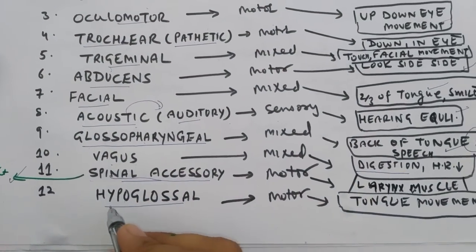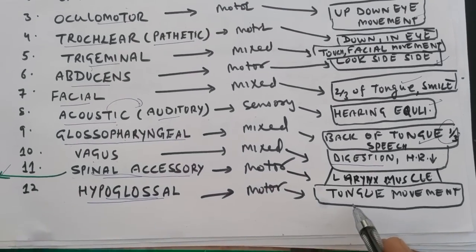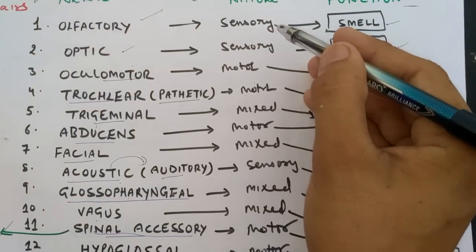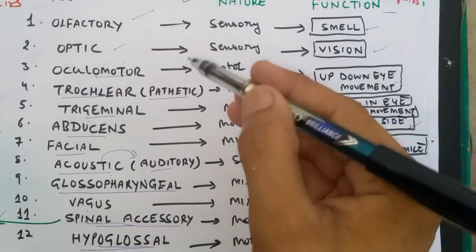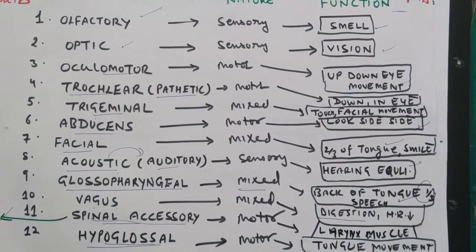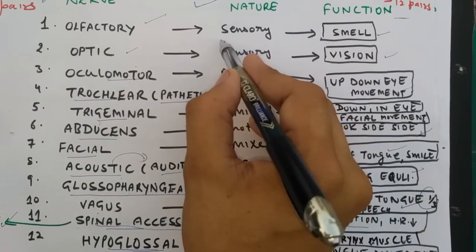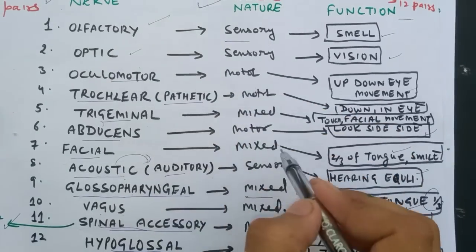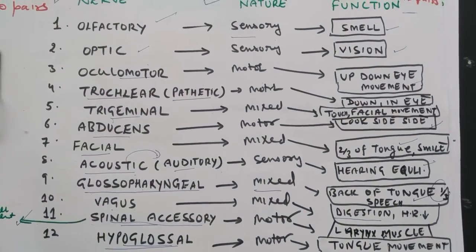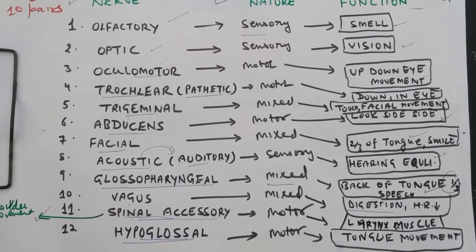Spinal accessory controls the larynx muscle and shoulder movement, upward and downward movement of our shoulder. And the last is hypoglossal, which controls tongue movement. Next is their nature. It is the complicated type of nature: some are sensory, some motor, and some are mixed. I have discussed them in my earlier lectures of the nervous system.